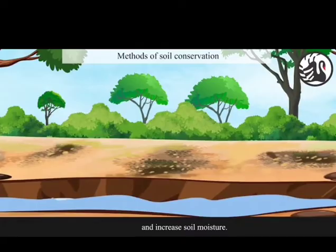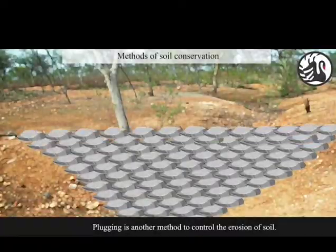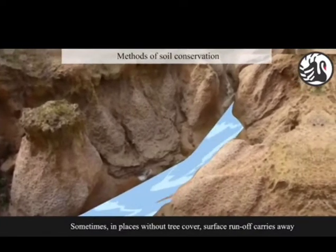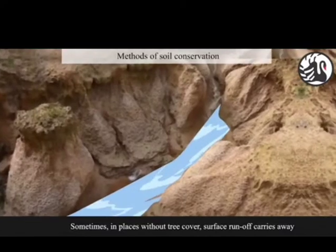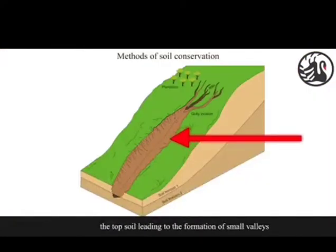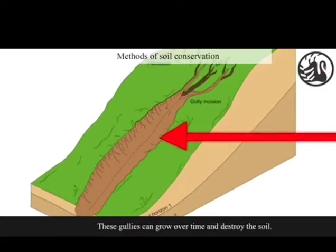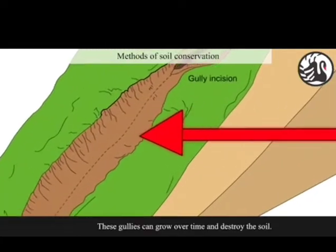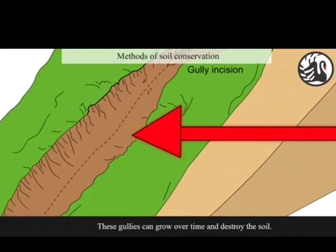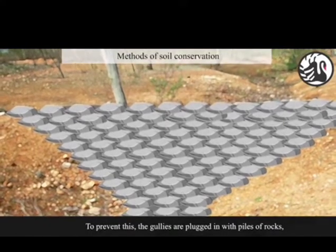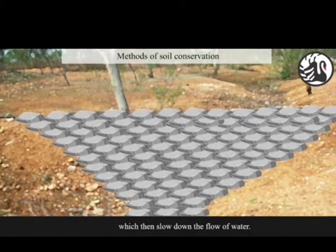Plugging is another method to control the erosion of soil. Sometimes, in places without tree cover, surface runoff carries away the top soil leading to the formation of small valleys or channels known as gullies. These gullies can grow over time and destroy the soil. To prevent this, the gullies are plugged in with piles of rocks which then slow down the flow of water.